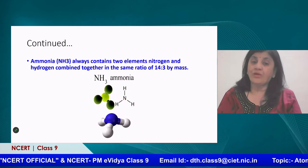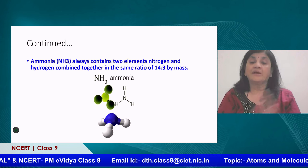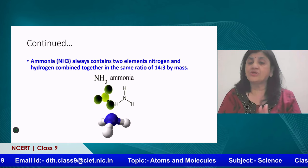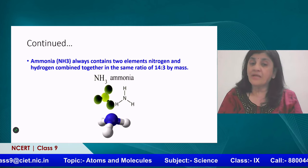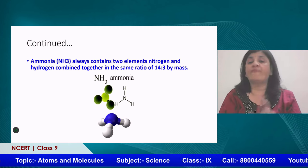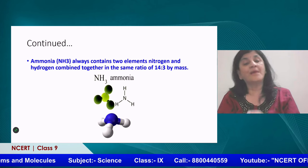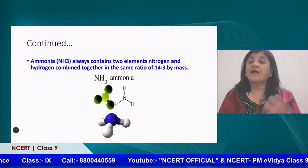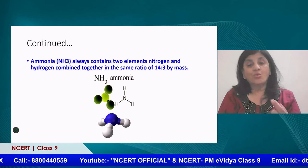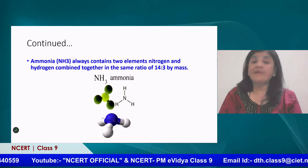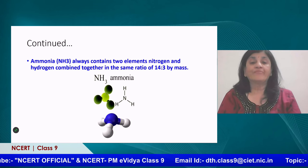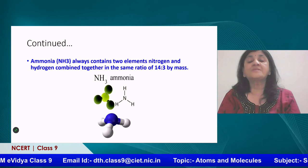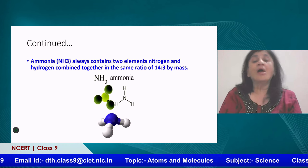The ammonia molecule is NH3 — 1 nitrogen and 3 hydrogens. Ammonia always contains two elements, nitrogen and hydrogen, combined together in the same ratio of 14 to 3 by mass number. Here 14 is the mass number of nitrogen, and there are 3 hydrogen atoms each with mass 1, so the combined hydrogen mass is 3. So just like water had the ratio 1 is to 8, here the ratio is 14 is to 3 for the ammonia molecule.